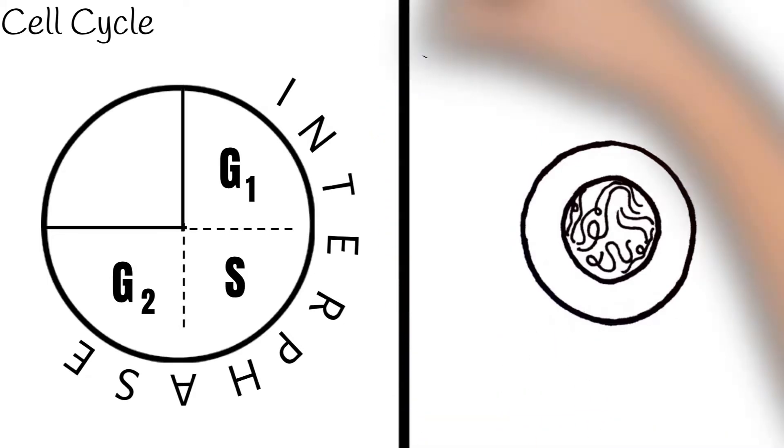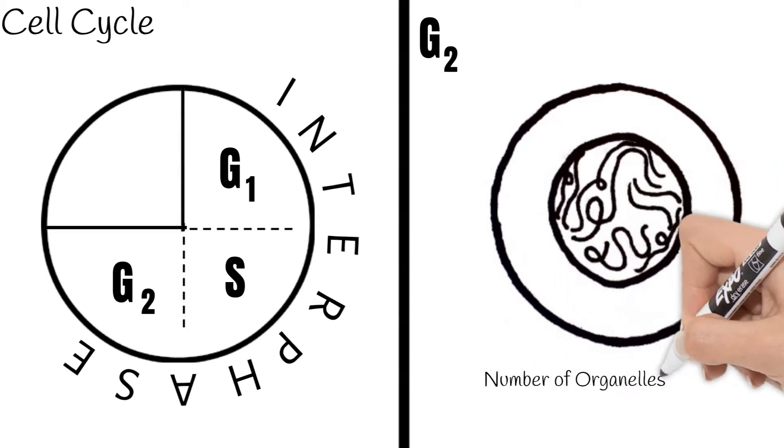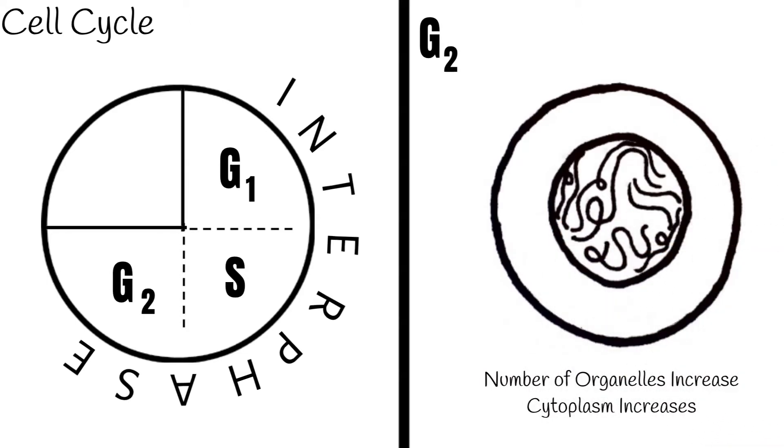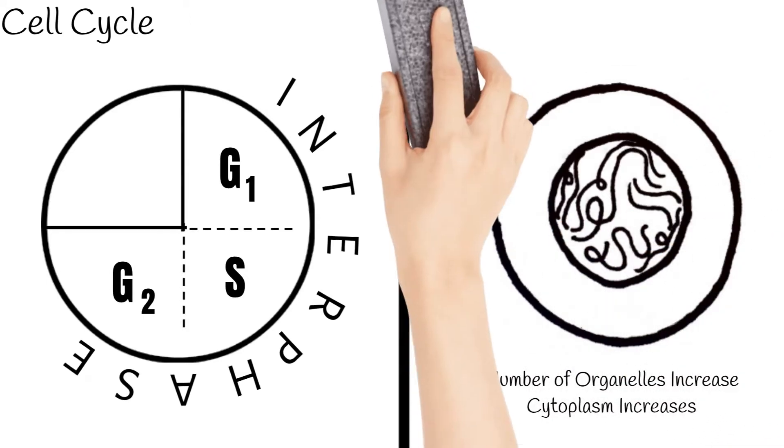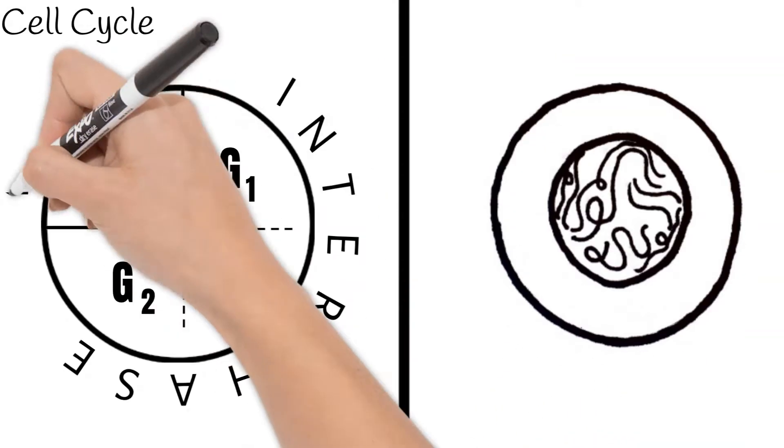The G2 phase is another time for the cell to grow like during G1. Now that we've gone through interphase, the cell is ready for mitosis.